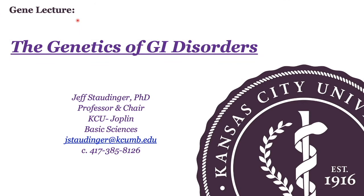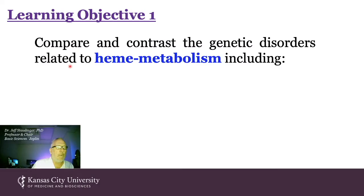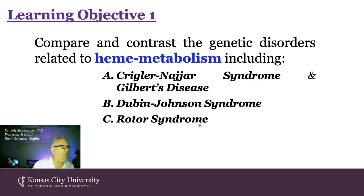This is a lecture entitled The Genetics of GI Disorders. My name's Jeff. We're going to compare and contrast the genetic disorders related to heme metabolism, including Krigler-Nijaar syndrome, Gilbert's disease, Dubin-Johnson syndrome, and Rotor's syndrome.